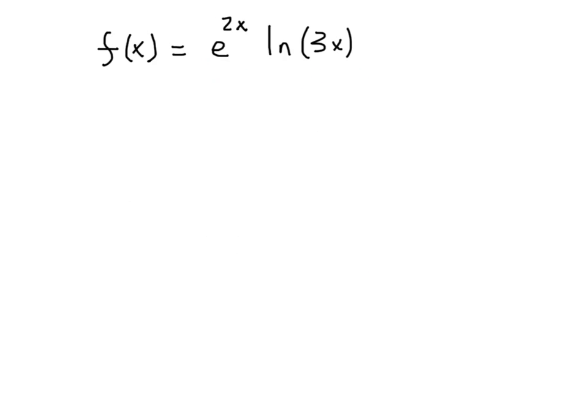One more quick example. Let's put two of the things we've been studying together. We're going to do a product rule: e to the 2x times the natural log of 3x. Keep in mind that both of these include a composition. It's a product rule, so I'm going to get organized. u equals e to the 2x. From our rules for exponential functions, the derivative is going to be e to the 2x times 2. I'm going to write that as 2e to the 2x because I have to follow the chain rule.